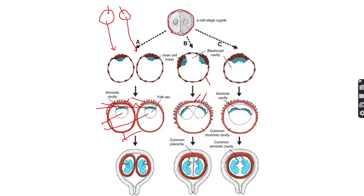In another type of monozygotic twin pregnancy, a single blastocyst forms with two inner cell masses, but they are very close together. Due to their closeness, only a single amniotic cavity is formed. This type of pregnancy is known as monochorionic monoamniotic twin pregnancy, and it contains a single placenta.